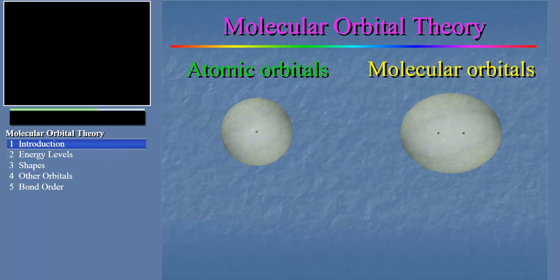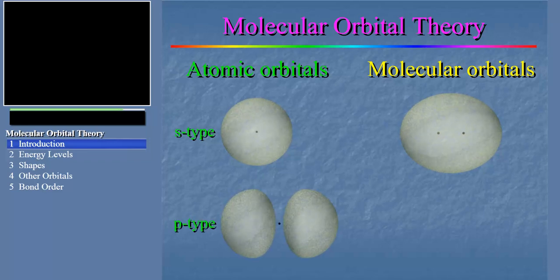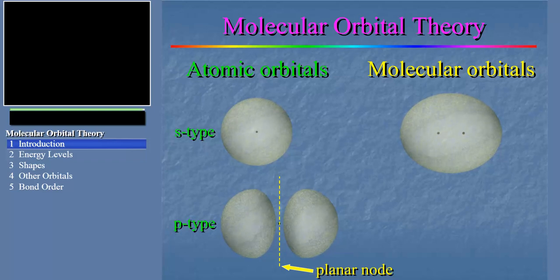There are certain principles which are common to each of the various types of atomic orbitals. For example, S-type atomic orbitals are spherical in shape and don't have planar nodes. P-type atomic orbitals are dumbbell shaped and always have a planar node. By comparison, there are sigma-type and pi-type molecular orbitals, each of which has its own unique characteristics of shape.